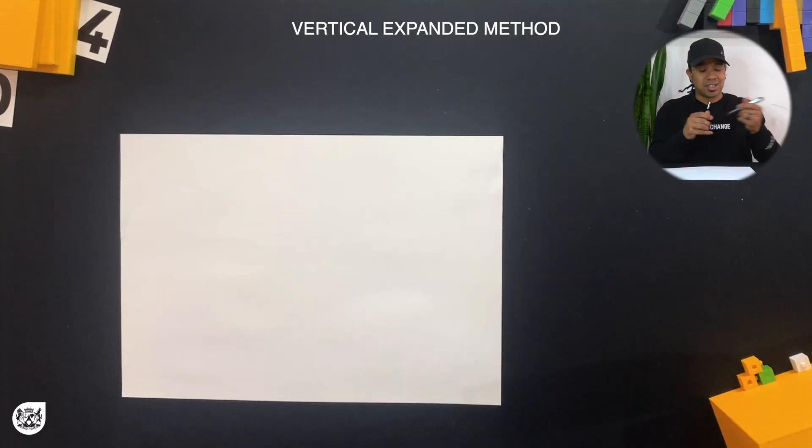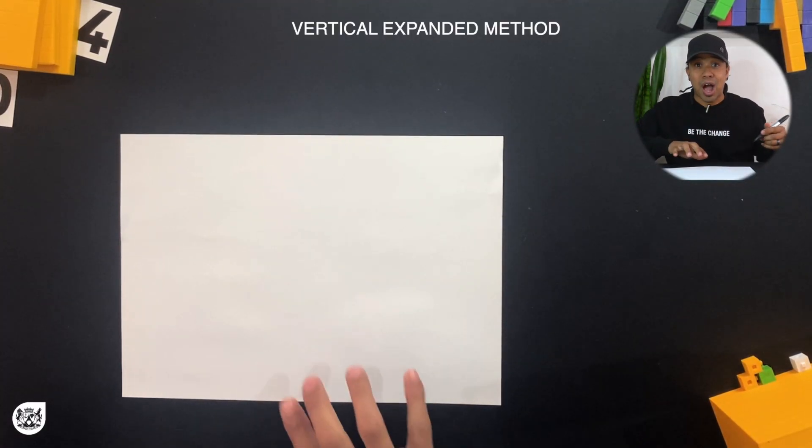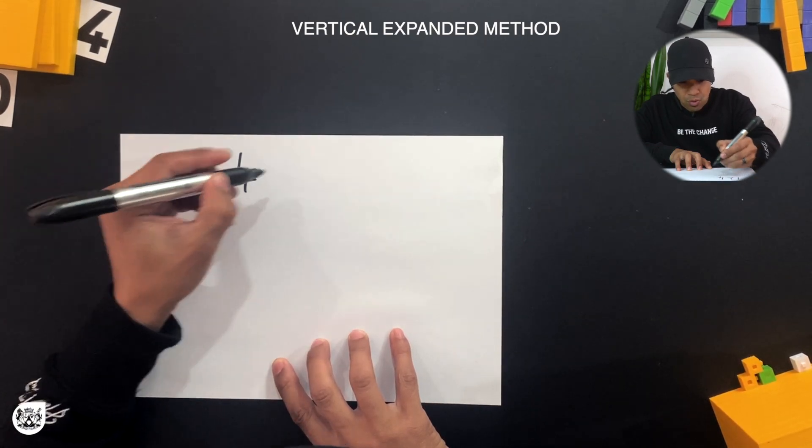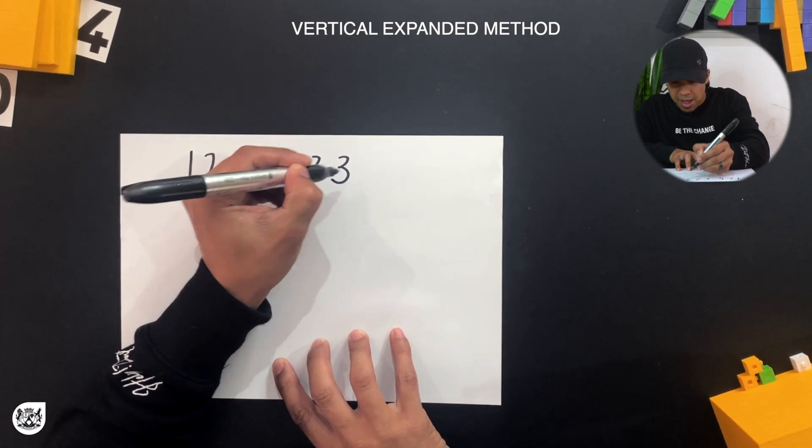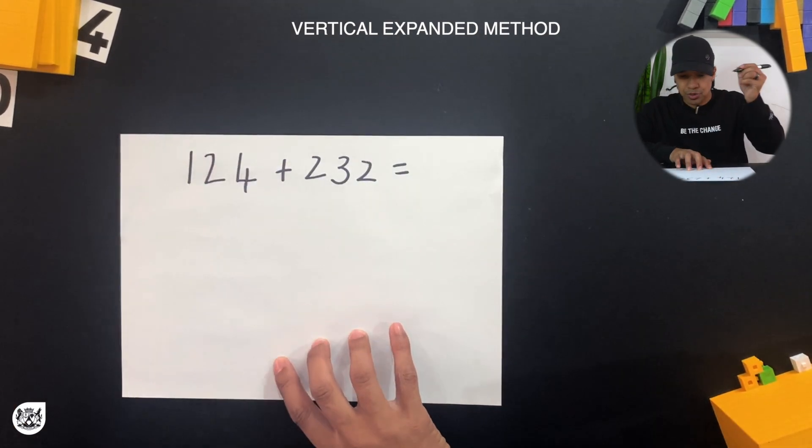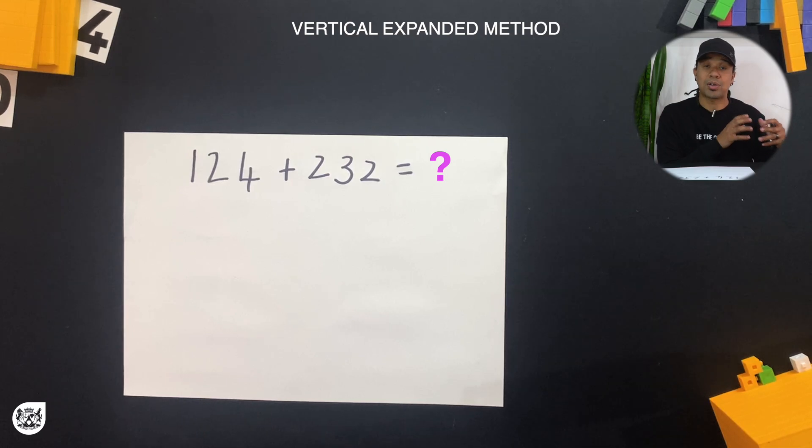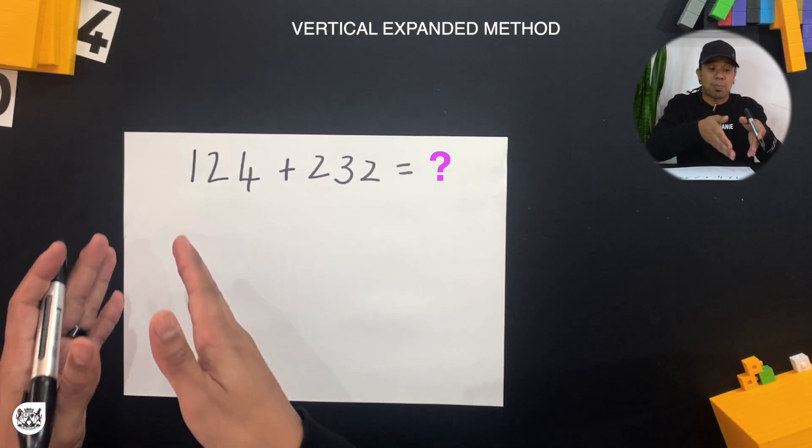So let's start off by writing down our question. We have 124 plus 232, and we want to know what that equals. Like we did in the previous two videos using the base 10 blocks and the place value cards, we're going to add one place value at a time starting at the hundreds, then the tens, then the units. First step is we're going to write our place values on the left hand side of the page vertically.